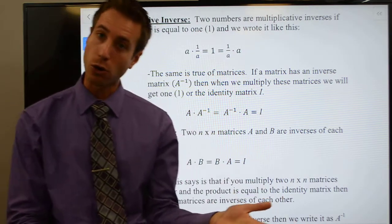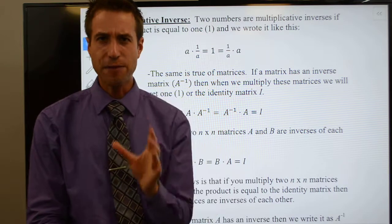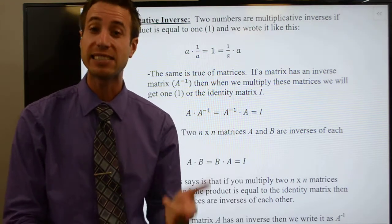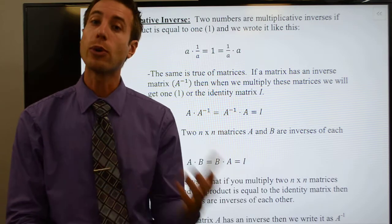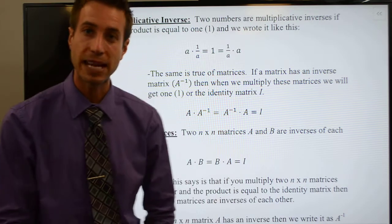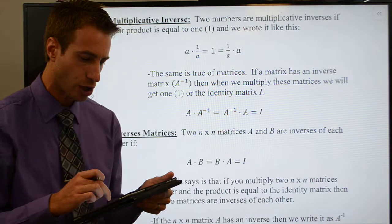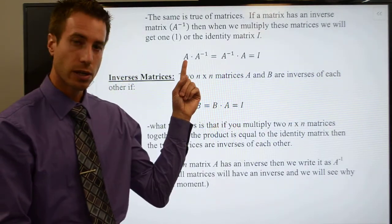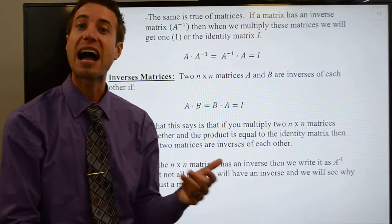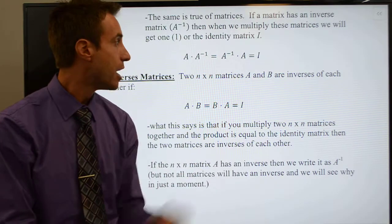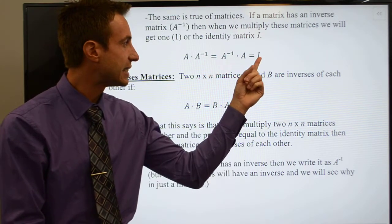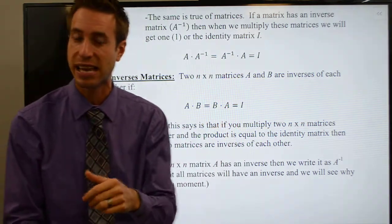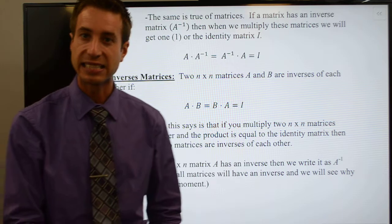It turns out the exact same thing is also true for matrices. If you take a matrix and you multiply that matrix by its inverse, you're going to get the identity matrix. And that's exactly what I'm showing you right here. If you take any matrix and you multiply it by its inverse, you're going to get the identity matrix. Remember the multiplication is commutative in this case, because we're getting the identity matrix.